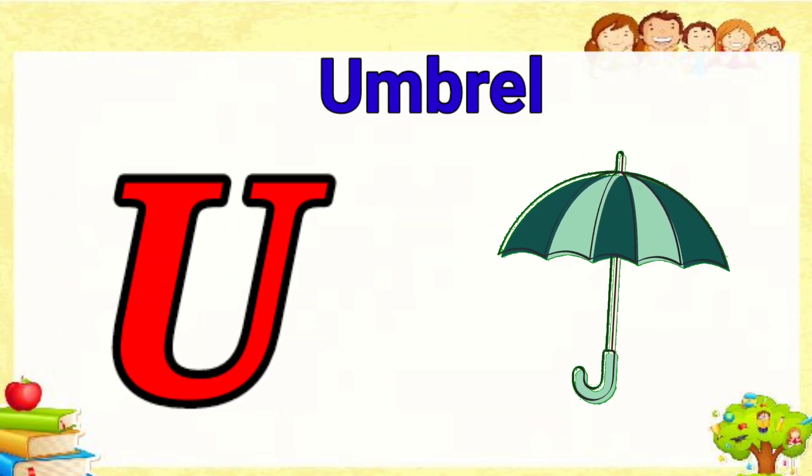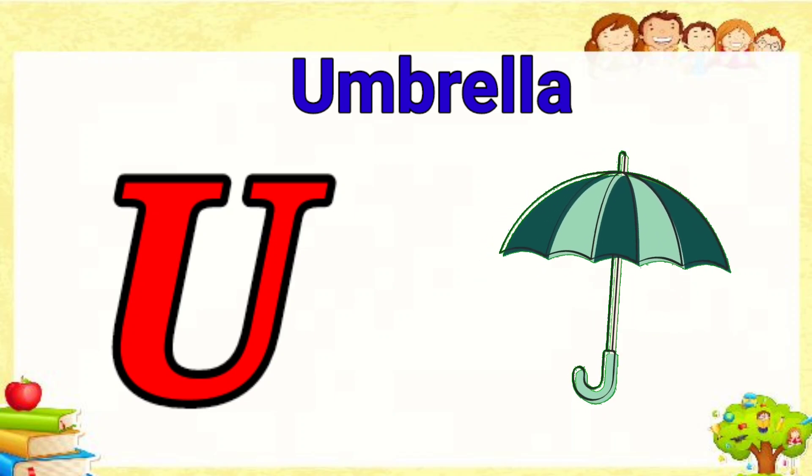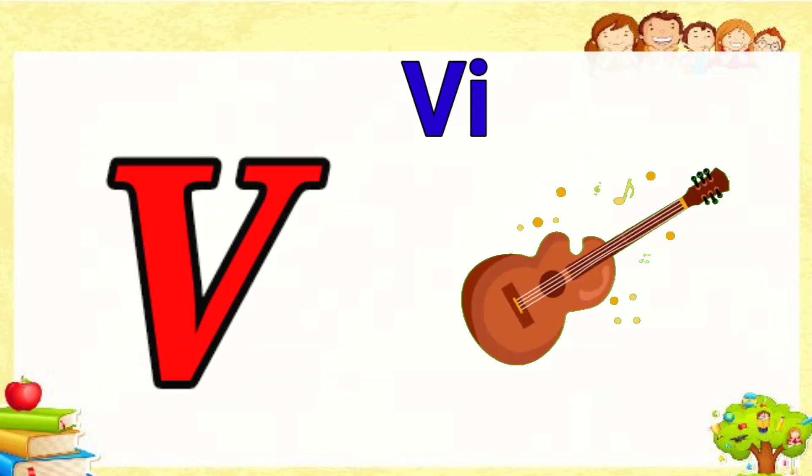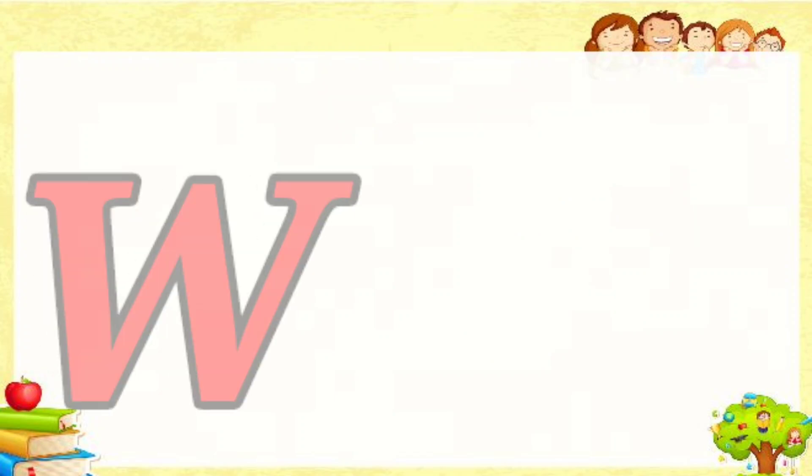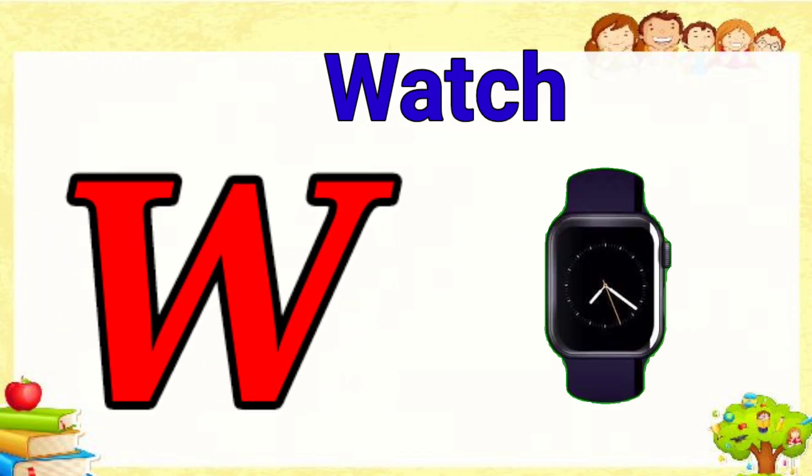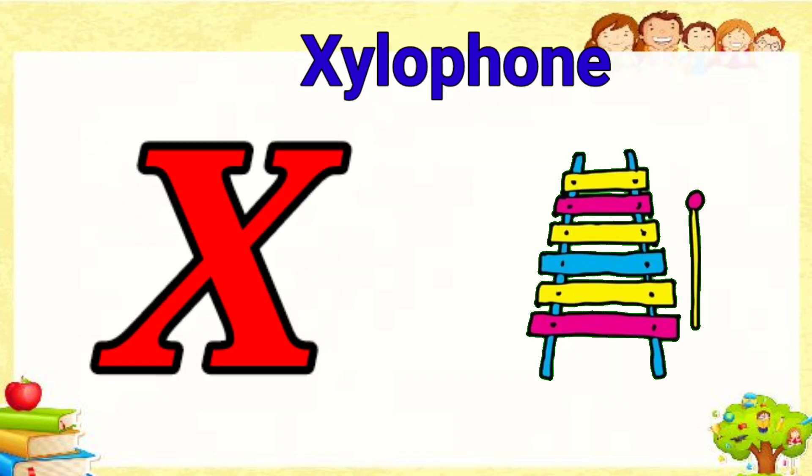U is for umbrella, u-u-umbrella. V is for violin, v-v-violin. W is for watch, w-w-watch. X is for xylophone, x-x-xylophone.